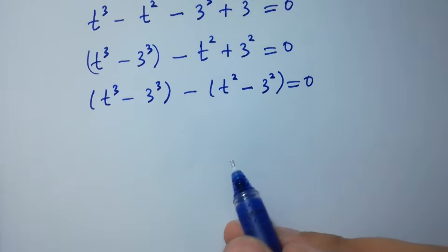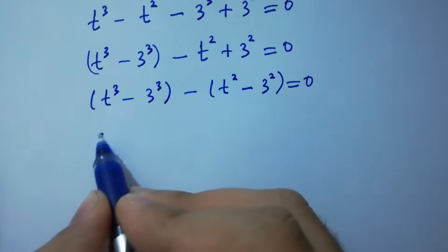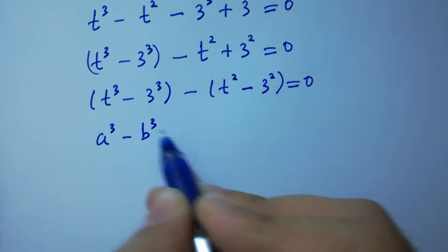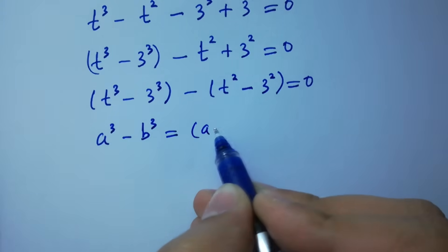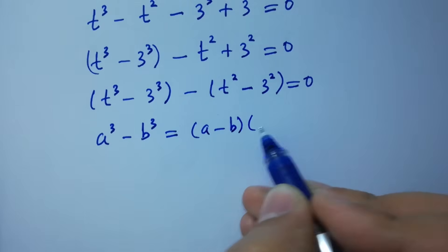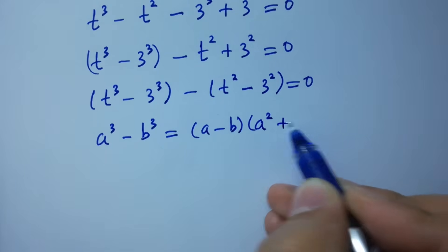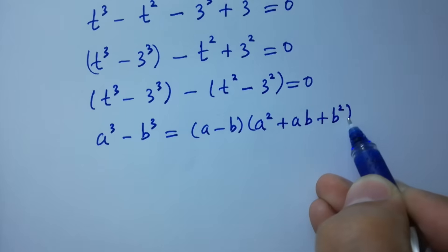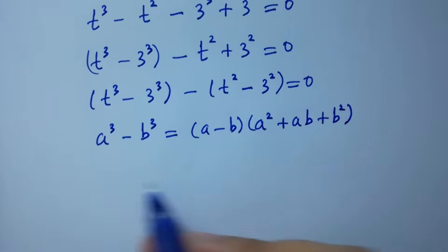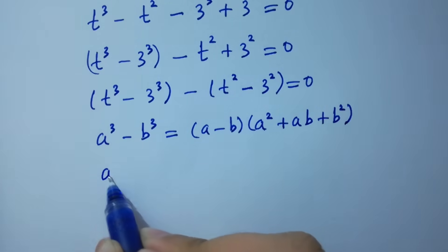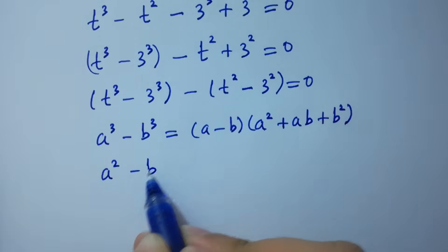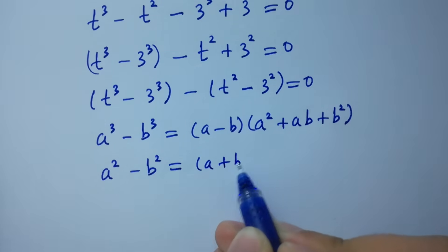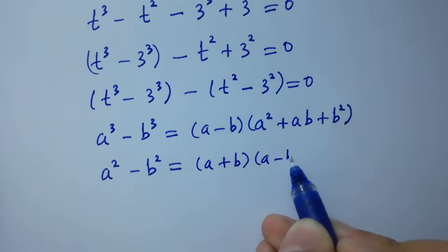As we know, a³ - b³ = (a - b)(a² + ab + b²), and a² - b² = (a + b)(a - b).